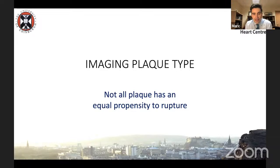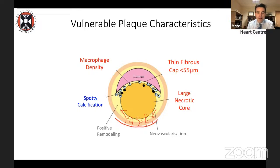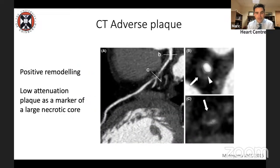There's also something about plaque type, because not all coronary plaques have an equal propensity to rupture. We have the classical idea of the vulnerable plaque — the types of pathological features that culprit plaques have. When we look at people who've had heart attacks, their plaques commonly show a large necrotic core, positive remodeling, macrophages, thin fibrous cap, and some early calcification.